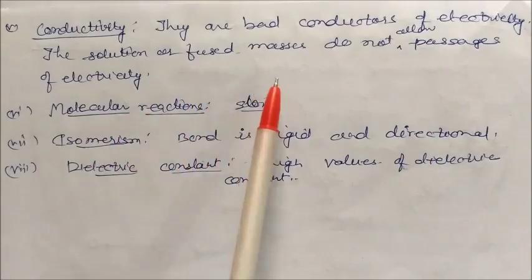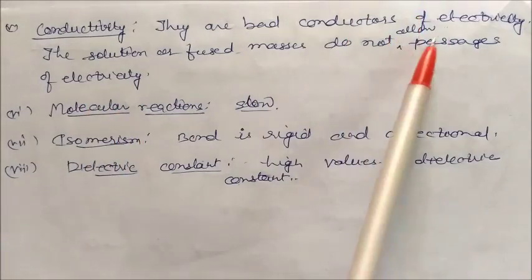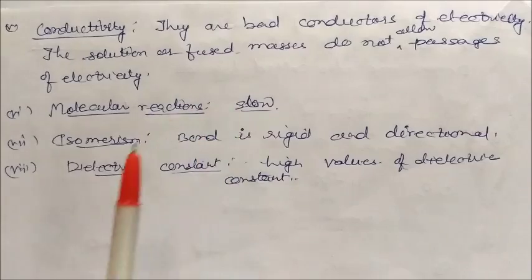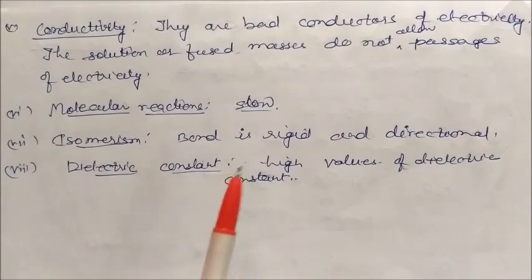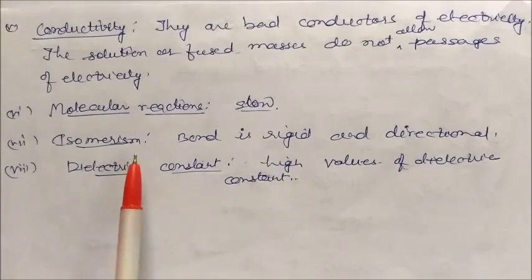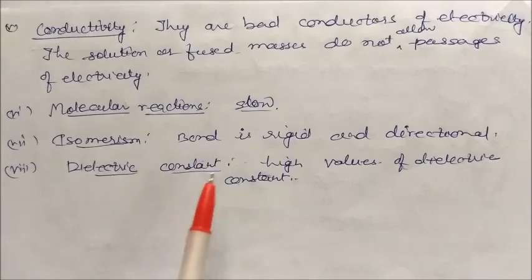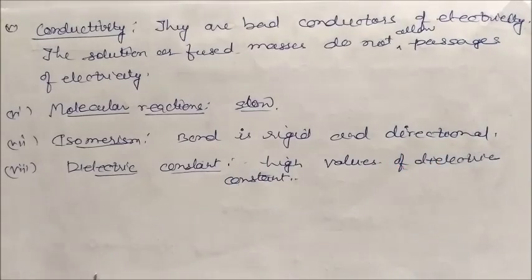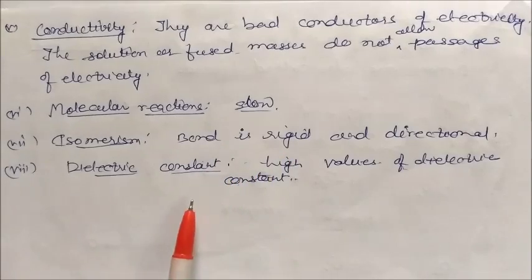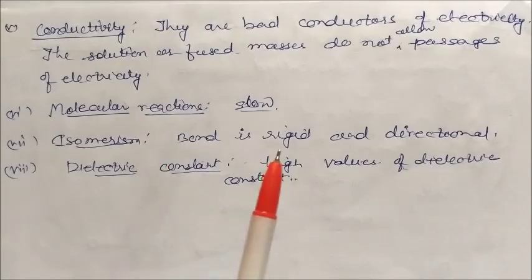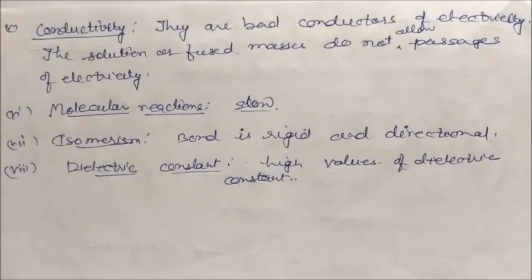Regarding conductivity, they are bad conductors of electricity — solutions or fused masses do not allow passage of electricity. Molecular reactions are very slow for coordinate compounds. Isomerism: they form isomers because bonds are rigid and directional, forming fixed structures in space. Dielectric constants: they have high values of dielectric constants. We will learn more about all of this in the chapter on coordination compounds.